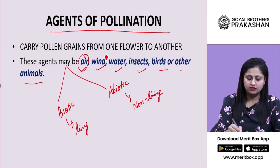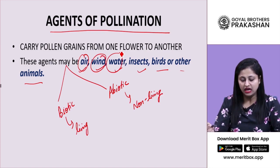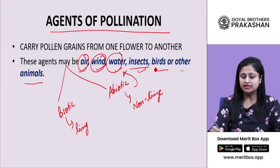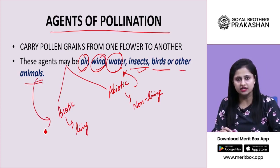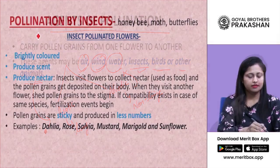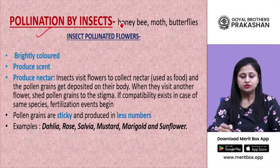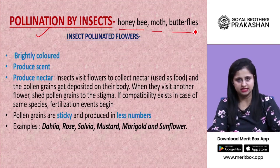Air, wind, and water are abiotic agents, while insects, birds, and other animals are biotic since they are living. Pollination by insects can be carried out by honeybees, moths, butterflies, or any other insects and flies.